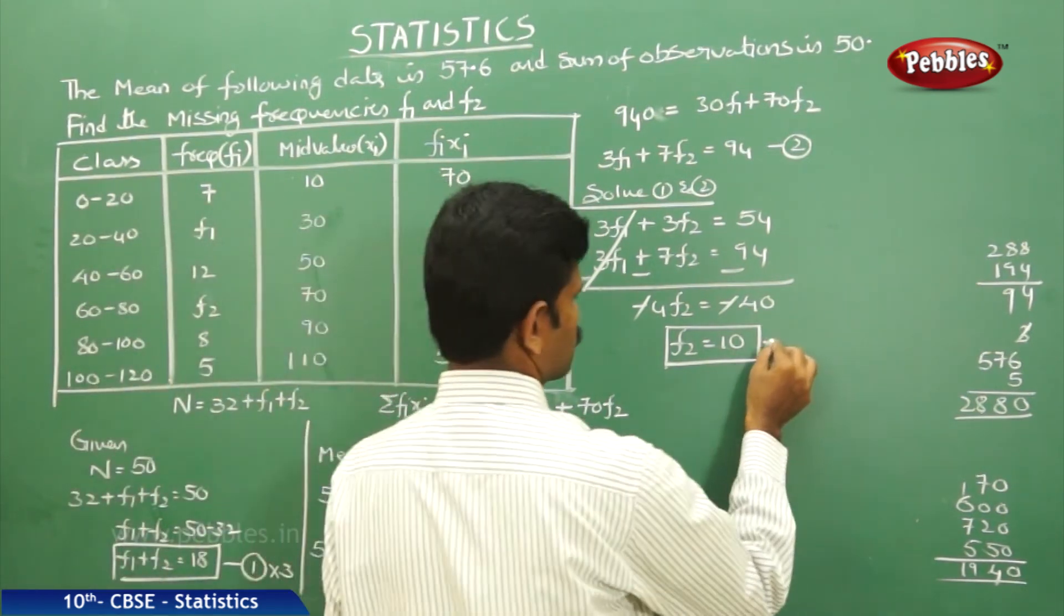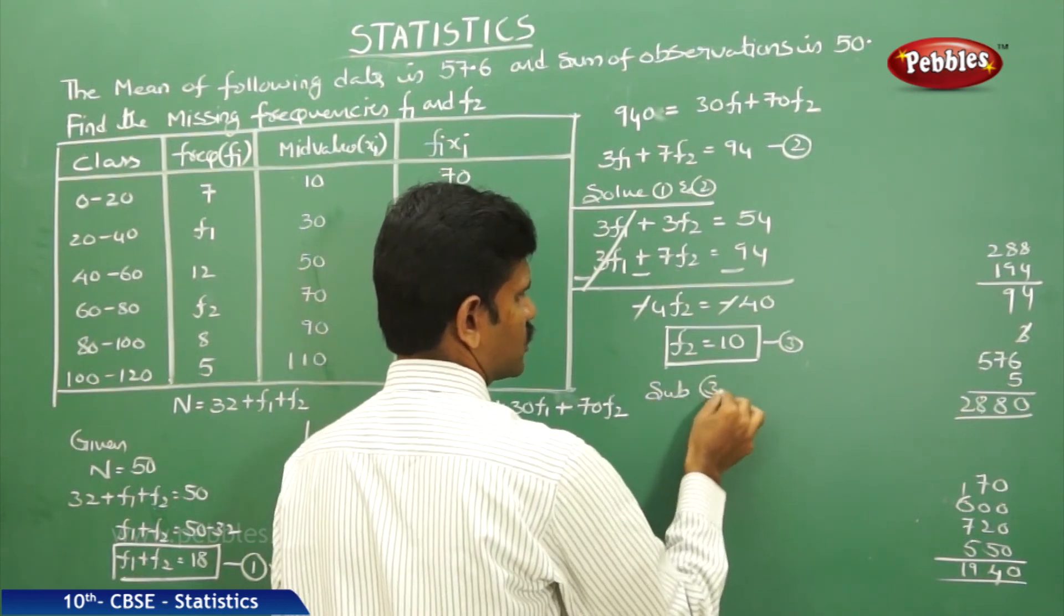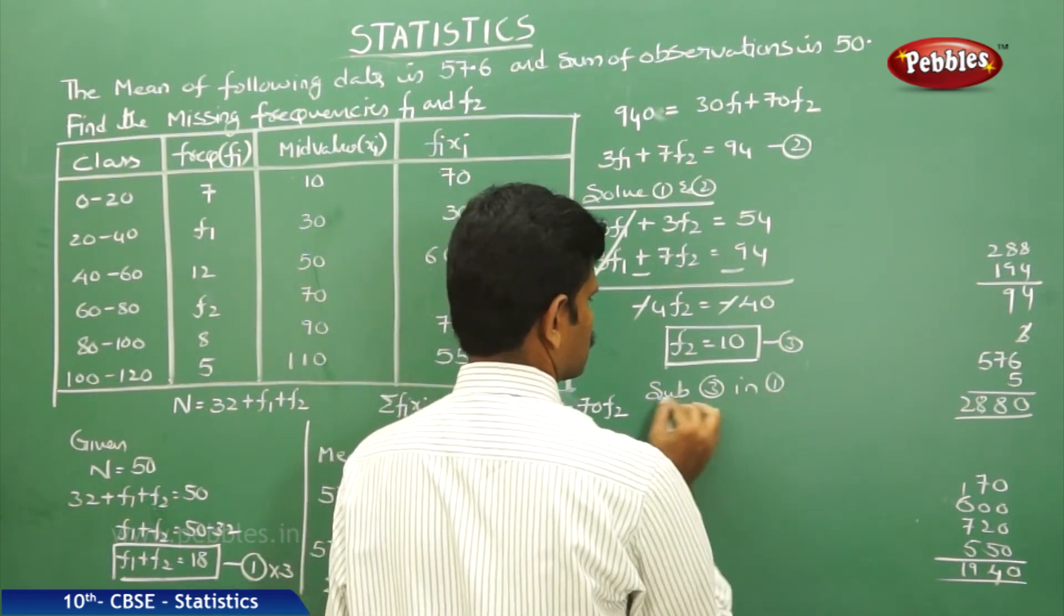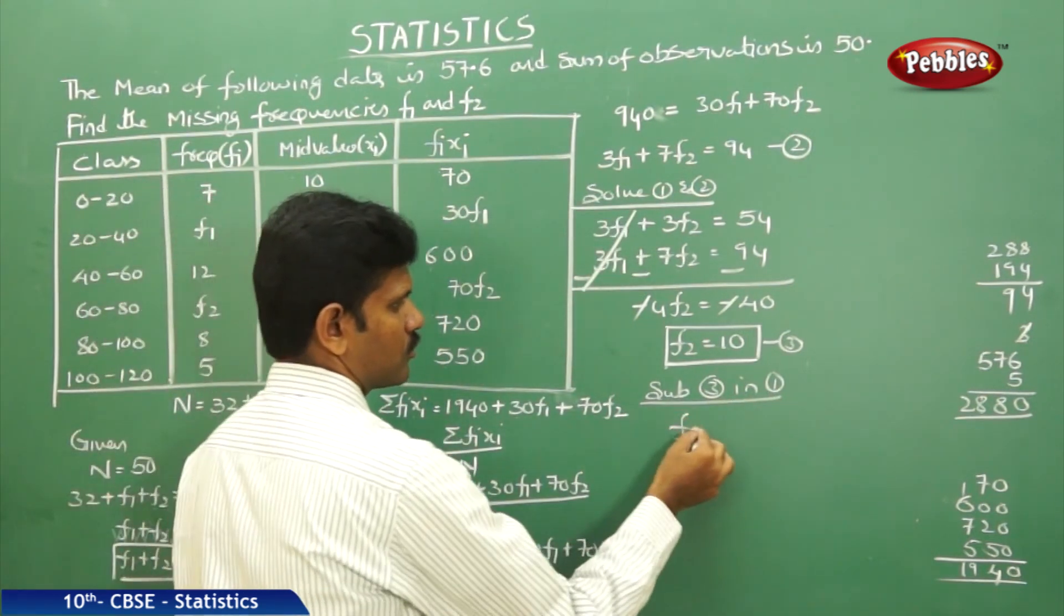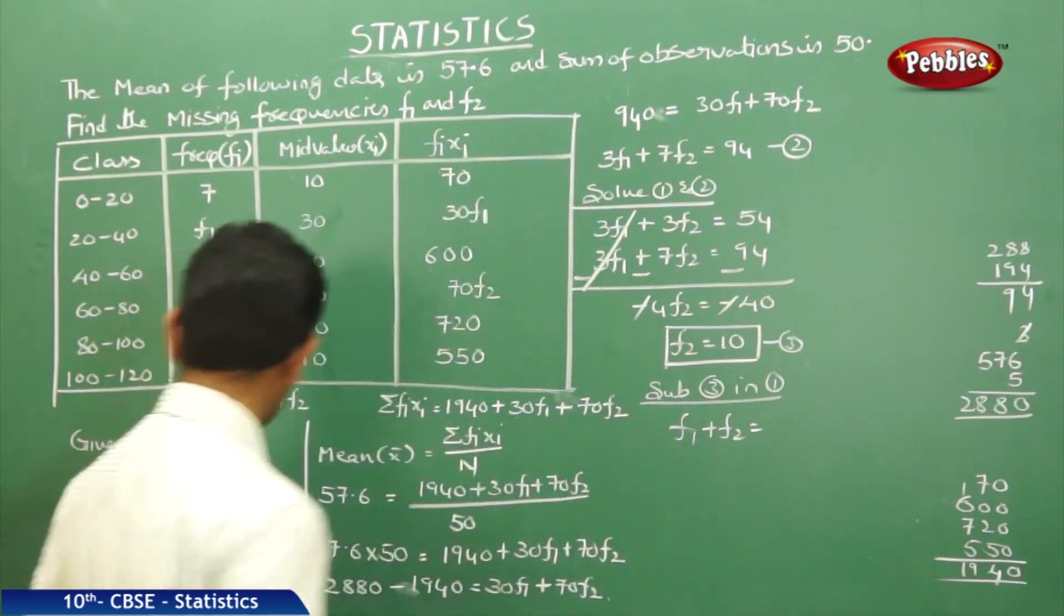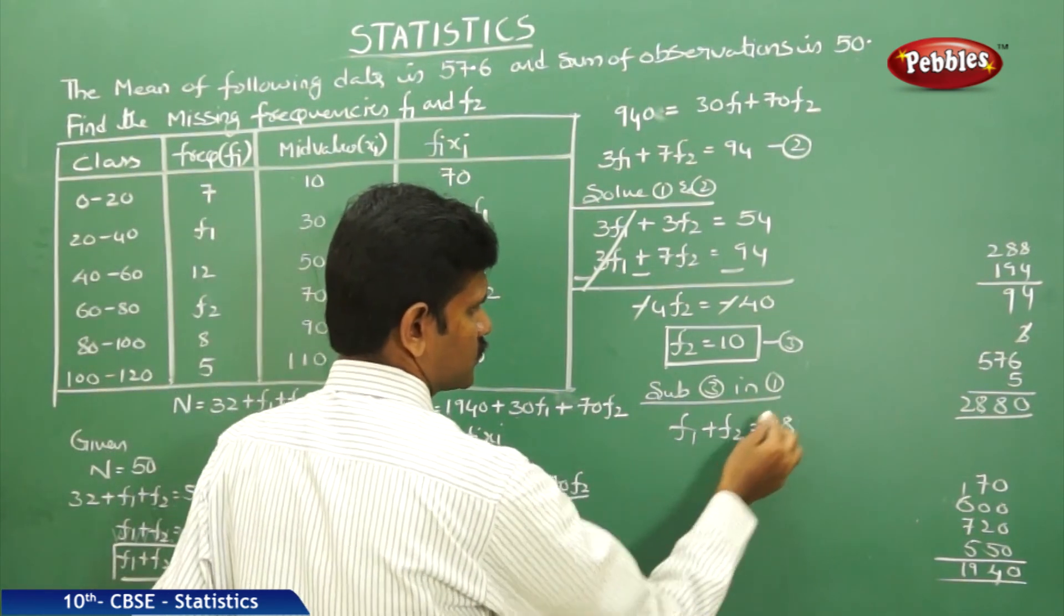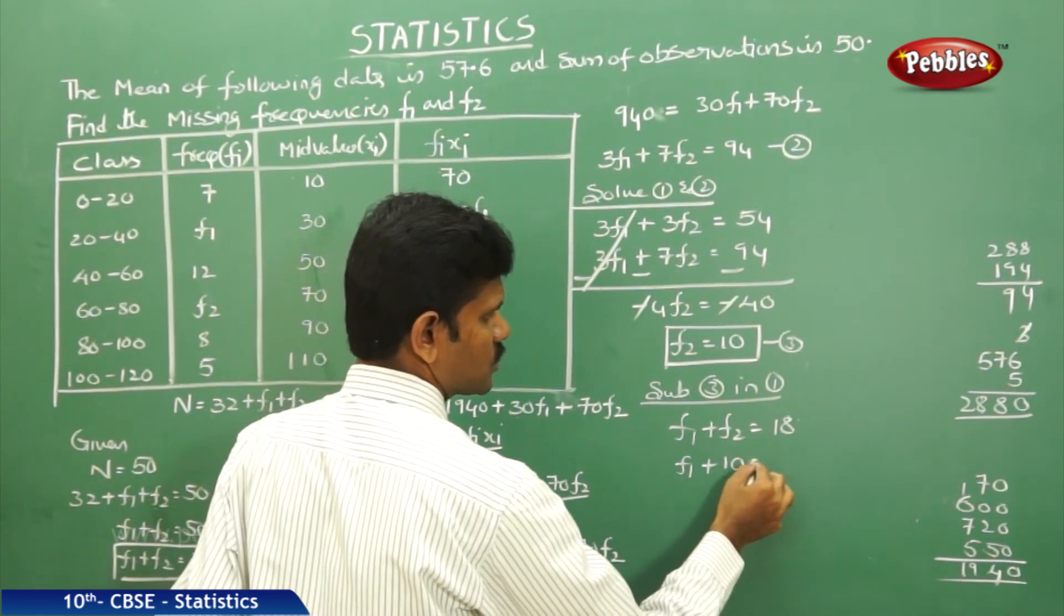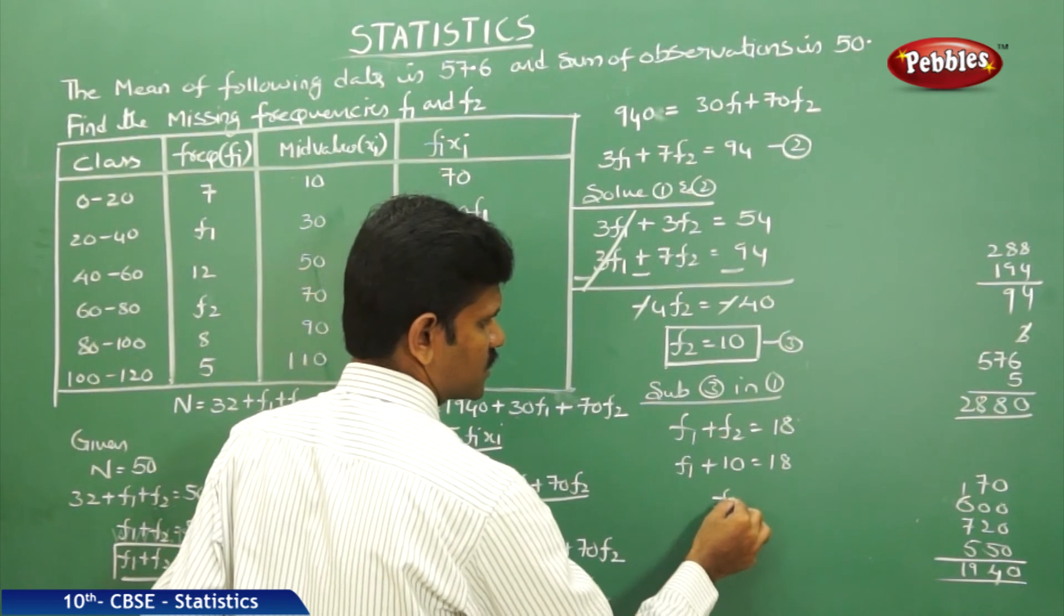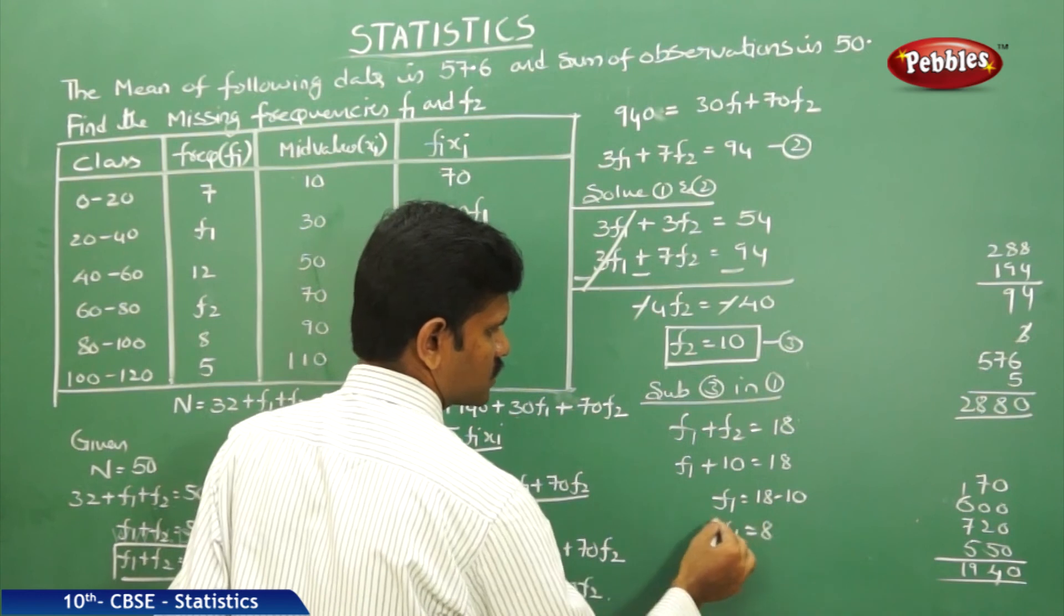Now this is equation 3. Substitute equation 3 in equation 1. That is F1 plus F2 is equal to 18. F1 plus 10 is equal to 18. That is F1 is equal to 18 minus 10, that is F1 is equal to 8.